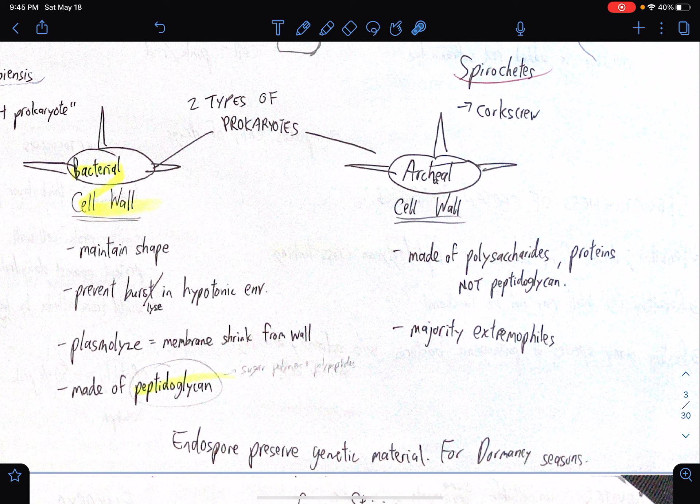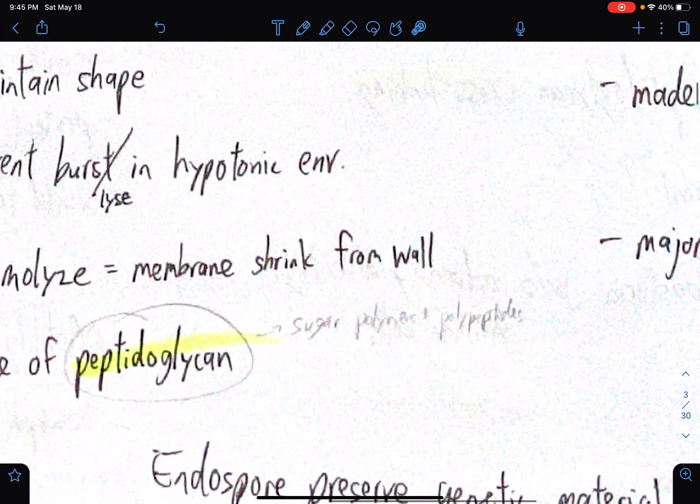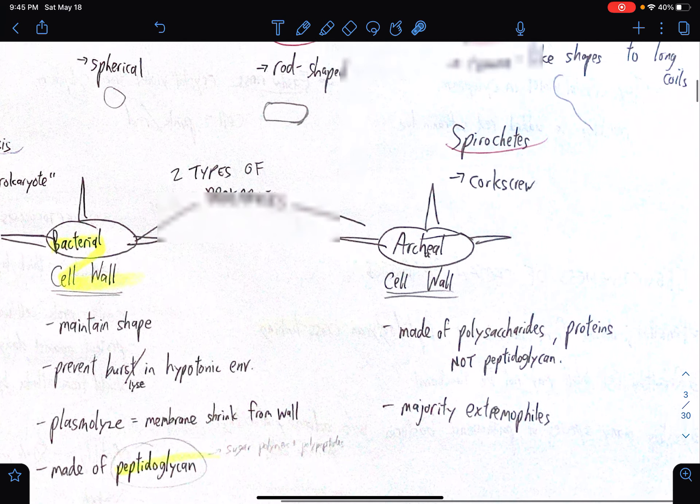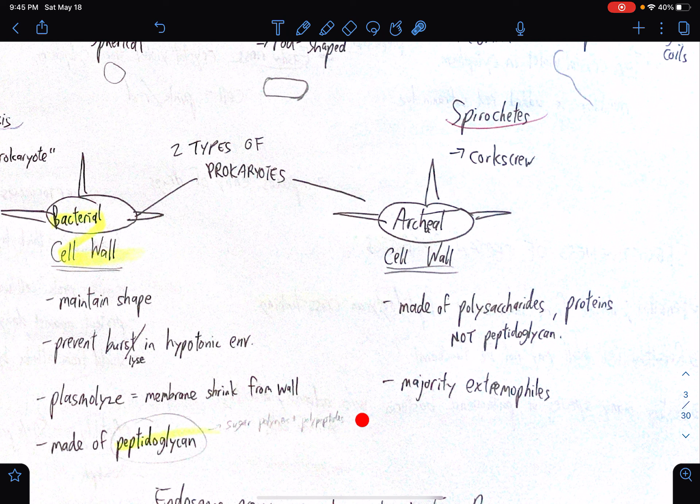A peptidoglycan is composed of a sugar polymer, I think, and polypeptides. Polypeptides relating to a chain of amino acids, if I'm not mistaken. Yeah, basically proteins. For the archaeal cell wall, this kind of cell wall is made out of polysaccharides and proteins, not peptidoglycan. So yeah, there's a difference between peptidoglycan and what proteins and polysaccharides constitute in the making of an archaeal cell wall. And yeah, majority that falls under this category, extremophiles. So extremophiles use this kind of cell wall, I suppose.